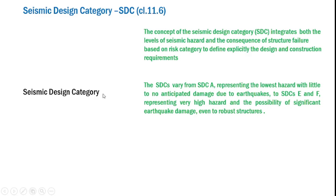The seismic design categories vary from SDC A, which represents the lowest hazard with little to no anticipated earthquake damage, all the way to the extreme categories SDC E and F, which represent very high hazard and the possibility of significant earthquake damage even to robust structures. Altogether we have six seismic design categories: A, B, C, D, E, and F.